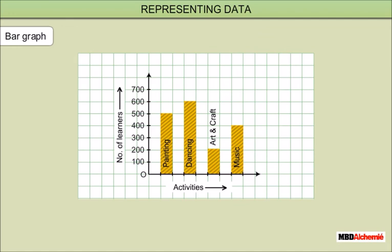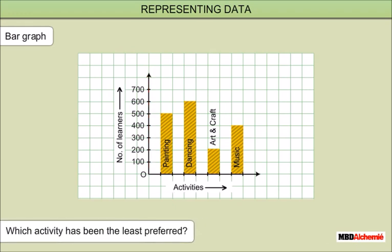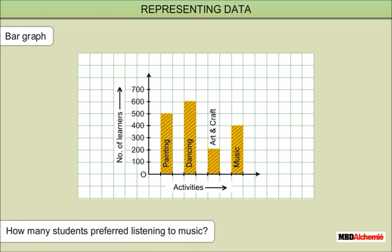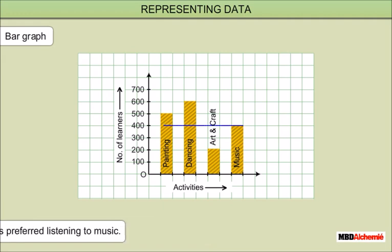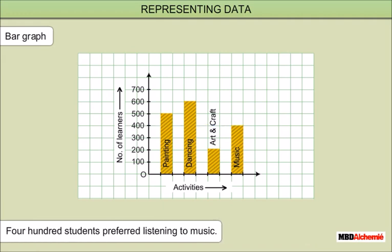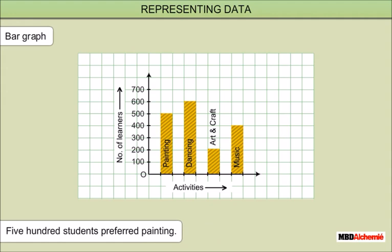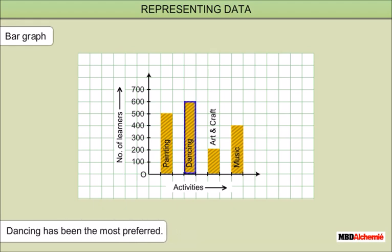The bar graph represents different activities preferred by grade 7 students. The horizontal axis represents the activities and the vertical axis represents the number of students. Which activity has been least preferred? Art and craft has been the least preferred. How many students preferred listening to music? 400 students preferred listening to music. How many students preferred painting? 500 students preferred painting. Which activity has been the most preferred? Dancing has been the most preferred.